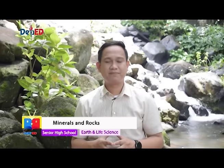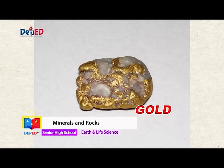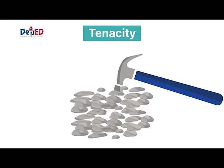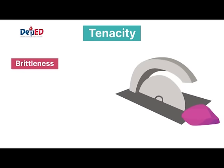The luster is the property of minerals that indicates how much the surface of a mineral reflects light. The luster of a mineral is affected by the brilliance of light used to observe the mineral surface. Tenacity is the characteristic that describes how the particles of a mineral hold together or resist separation.